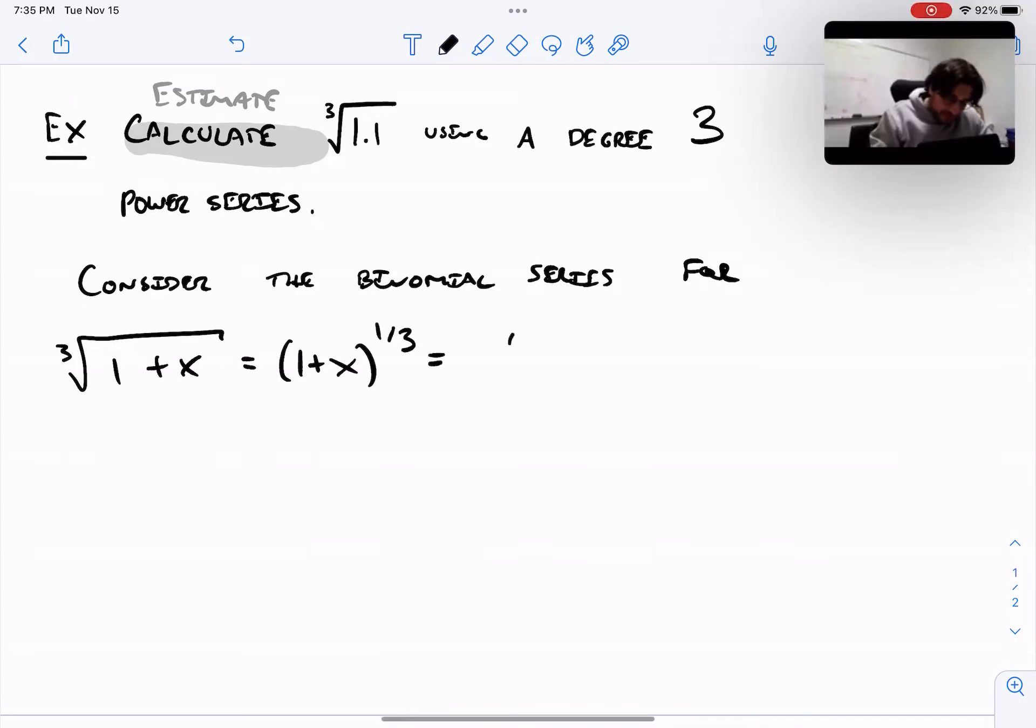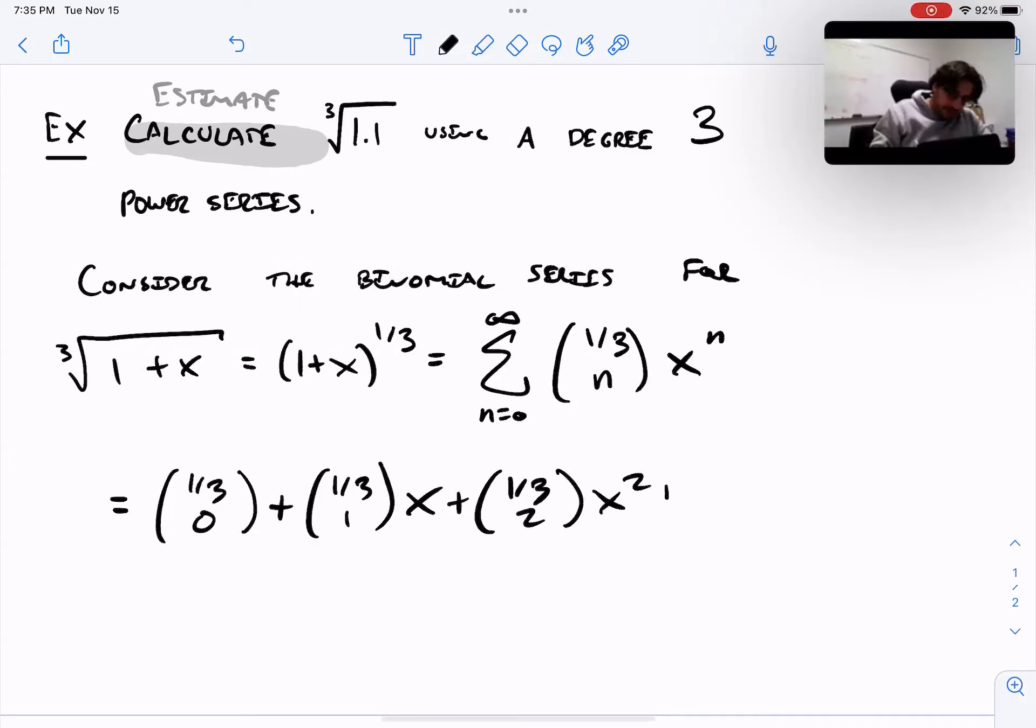This is a binomial series. How do you expand this? If you want to use the choose notation, you can say this is the sum from n=0 to infinity of (1/3 choose n) x^n. Or you can write it out in expanded form: (1/3 choose 0) + (1/3 choose 1)x + (1/3 choose 2)x² + (1/3 choose 3)x³ + dot dot dot. It keeps going forever.